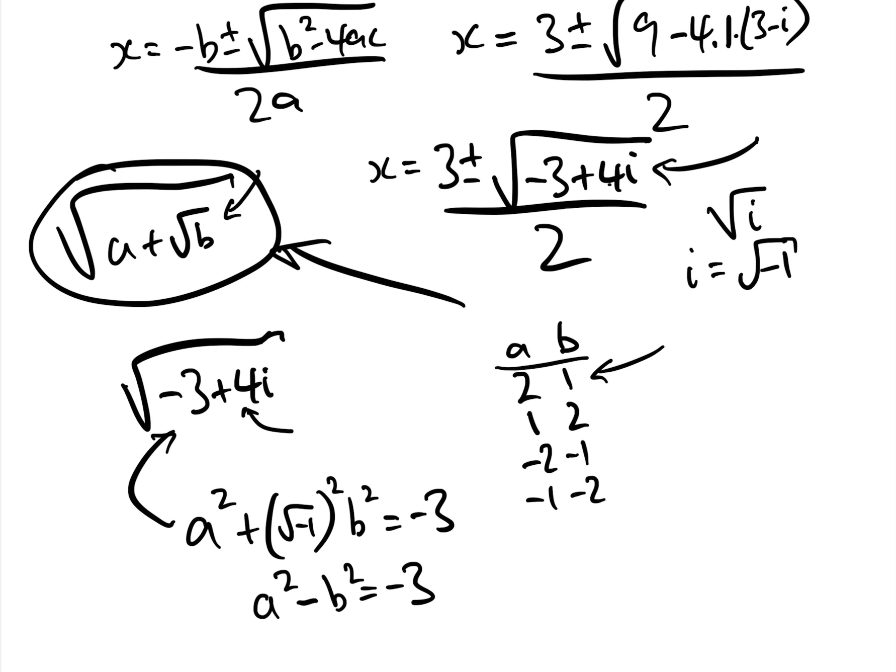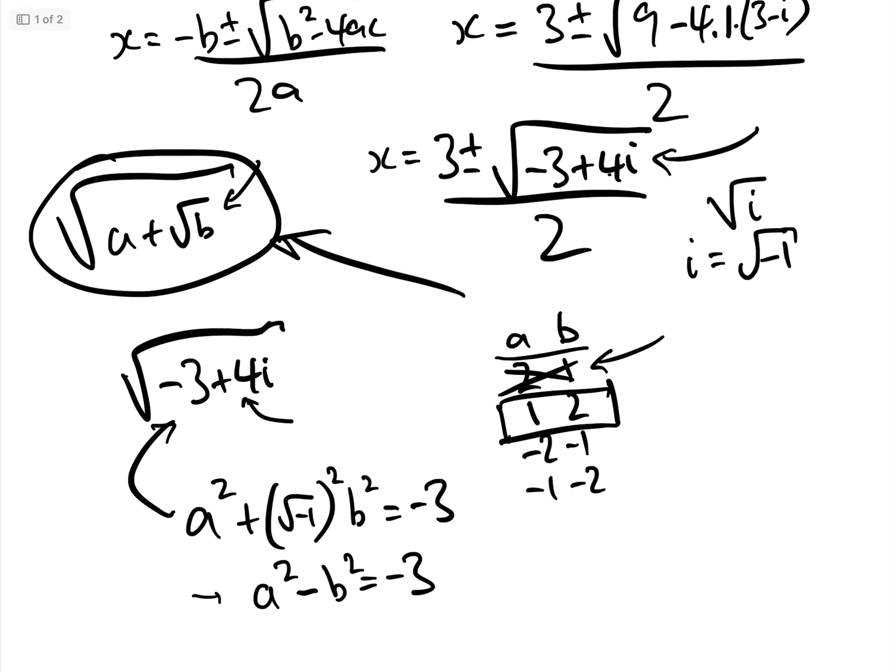Well, if a is 2 and b is 1, that's not minus 3. If a is 1 here, that's 1, take away b squared is 4, minus 3. Yeah, voila. We got the answer.